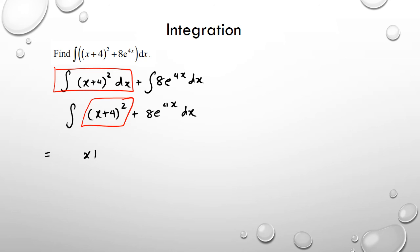So this would be (x+4)³ divided by 3, and then plus, now with integrating exponents, we write it as it is. We don't do anything to it, so it's just 8e^(4x), but we divide it by the differentiation of the power itself, which is 4.